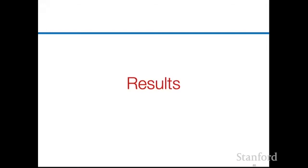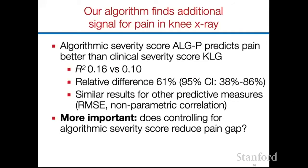Before showing results, a student asks: when comparing pain gaps across income and race, do we have to consider overlap between the groups? Yes — there is correlation between all three binary variables. Each individual pain gap remains statistically significant even when you control for all three at once. We looked at each group separately to keep the exposition clear. Our first result is that the algorithm finds additional signal for pain in the knee x-ray: ALGP predicts pain better than the clinician's KLG score — higher R-squared, statistically significant difference. Though those R-squared values are not that high — around 0.16 — the central question is whether controlling for ALGP reduces the pain gap.